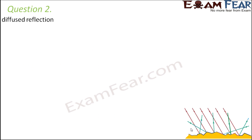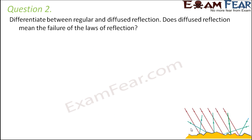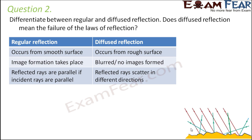Question number two: differentiate between regular and diffused reflection. Does diffused reflection mean the failure of the laws of reflection? Regular reflection occurs from a smooth surface, whereas diffused reflection occurs from a rough surface. In regular reflection, proper image formation takes place, but in diffused reflection no images are formed because the reflected rays get scattered.